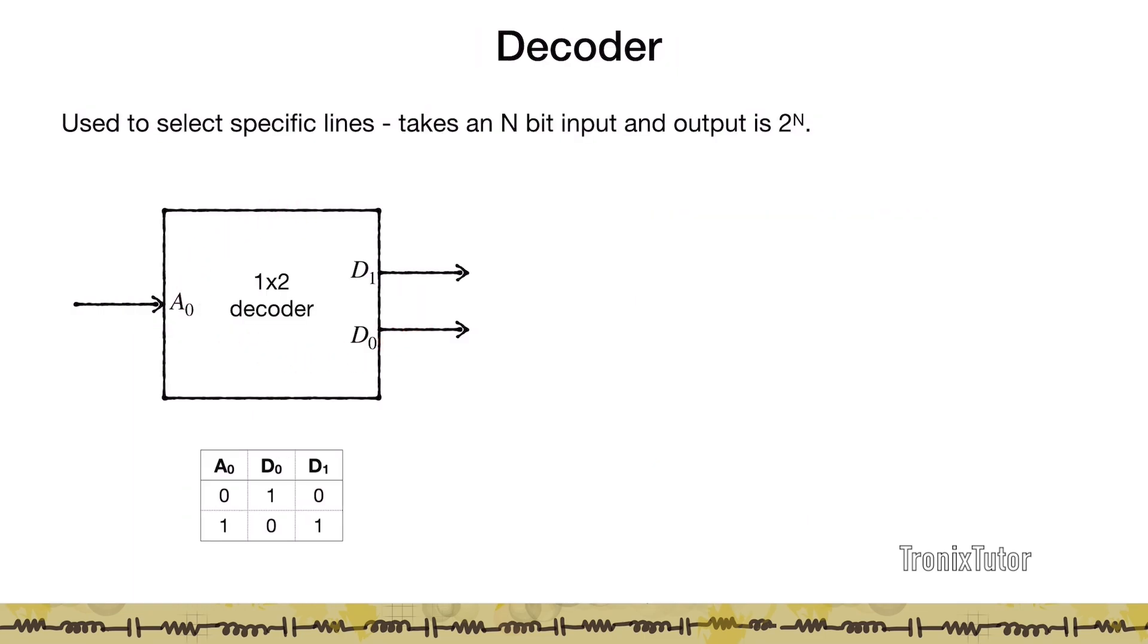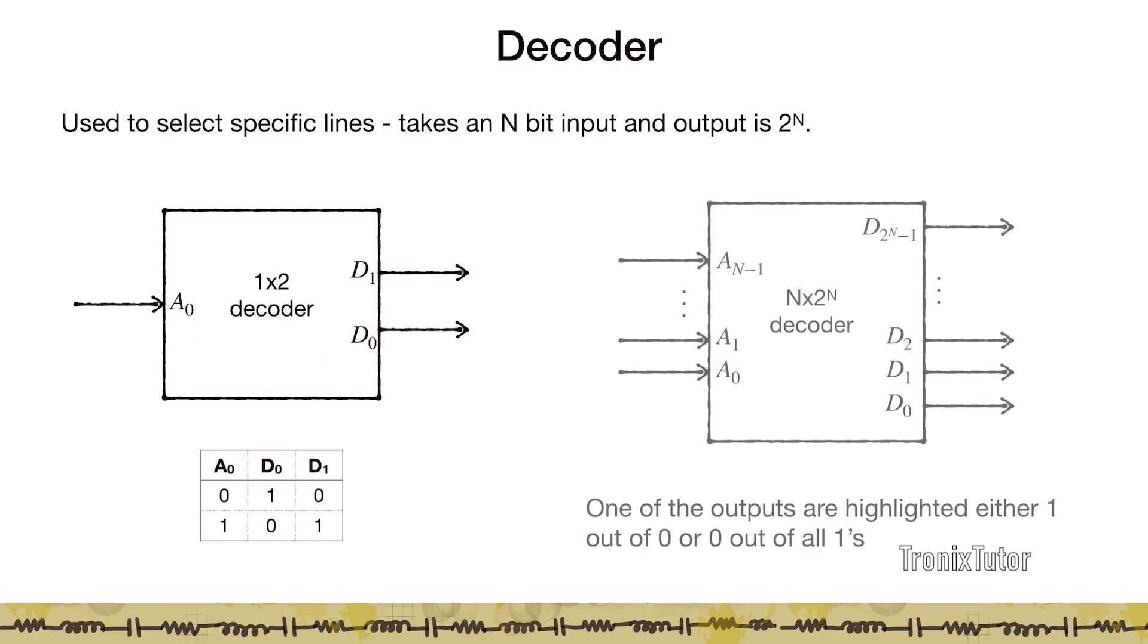What I want to do here is, I want to generate a 1 on one of these lines when I give an input here. This input, suppose my input is a 0, it ensures that my D0 line becomes high, my D1 line goes low. And when my A0 is a 1, my D1 line goes high and my D0 line goes 0. By using a decoder, I am able to select a particular line.